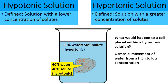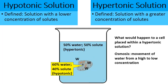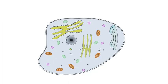What would happen to a cell placed in a hypertonic solution? By osmosis, water moves from high to low concentration. Since 60% water in the cell is higher than 50% in the beaker, water would actually diffuse out of the cell. The cell could start to shrivel and lose water mass as a result.